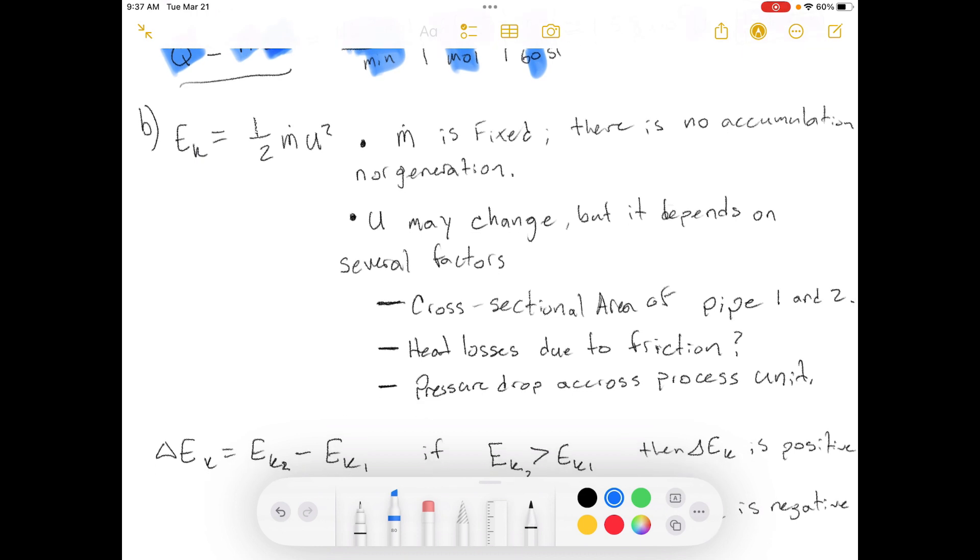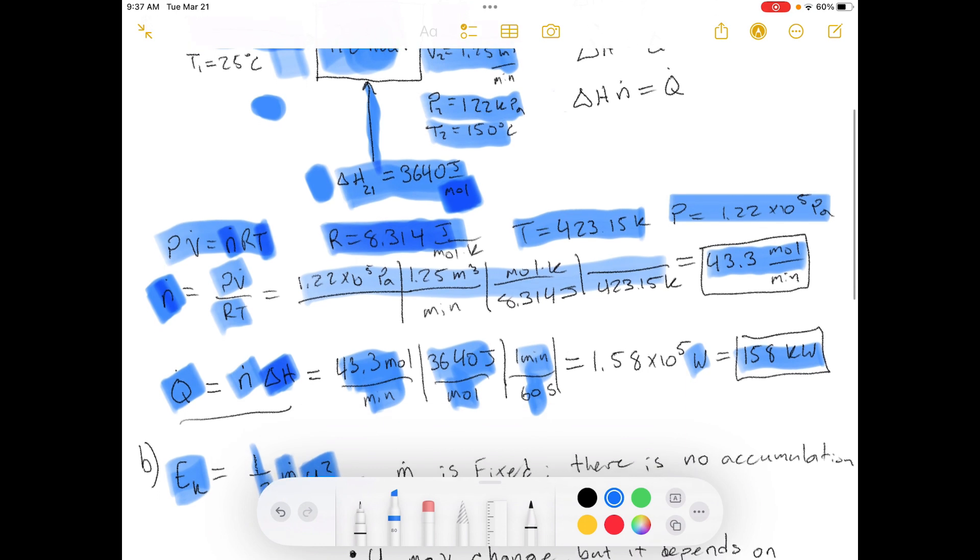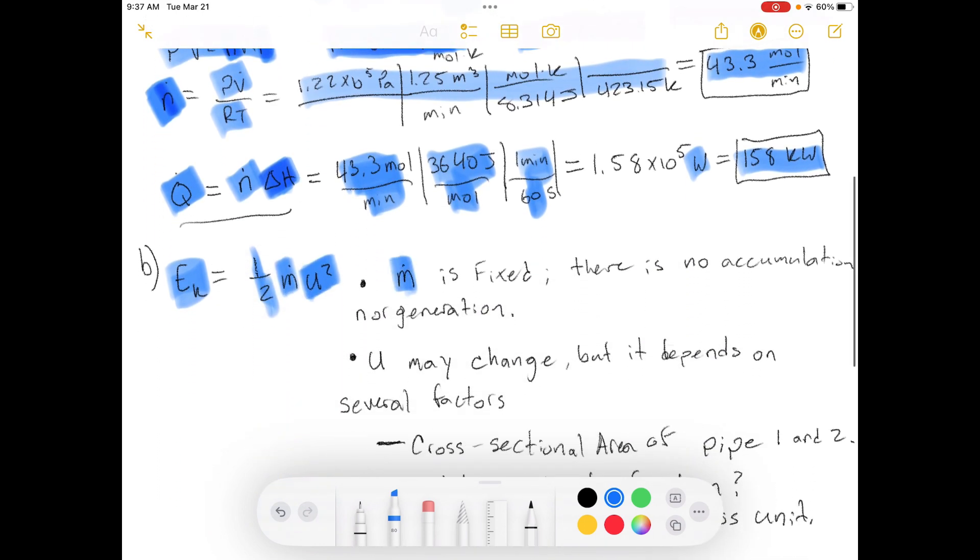So let's look at the equation for kinetic energy. Kinetic energy is equal to one half times the mass flow rate times the velocity squared. We know that in our system, there's no accumulation in this unit. So the mass flow rate is constant. There's no generation and there's no accumulation. Everything that comes in has to go out. That's the law of conservation of mass. So the mass flow rate is fixed, so this value doesn't change. This value is constant. So the only thing that could change is the velocity of the stream.